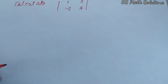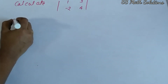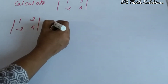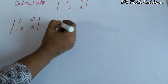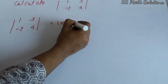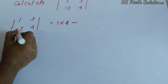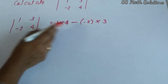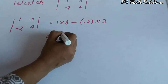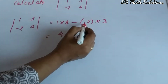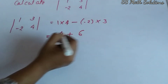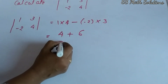Here is an example: calculate the determinant of [1, 3; -2, 4]. So the determinant equals 1 into 4, minus (-2) into 3. That is 1 into 4 is 4, minus (-2 into 3). The two minuses change to plus, so 4 plus 6 equals 10.